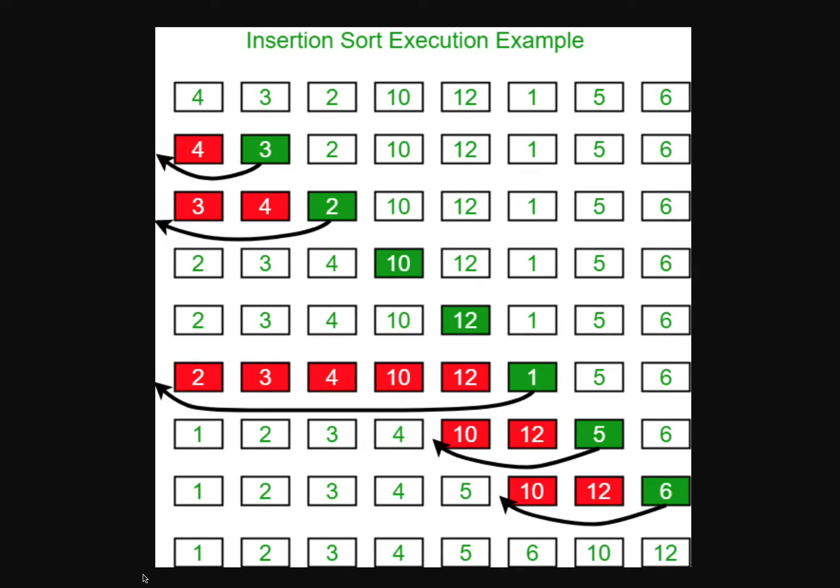And so looking at it, you could say, well, if the list is very randomized, then the time complexity would be n squared because you would have to have two nested for loops.